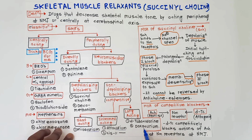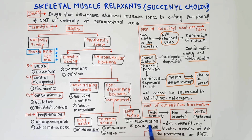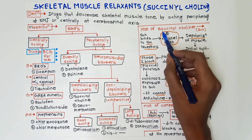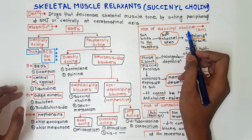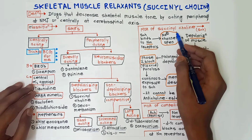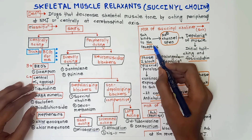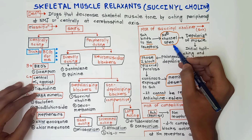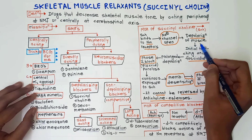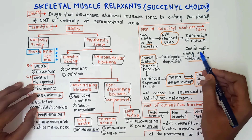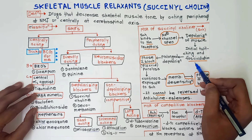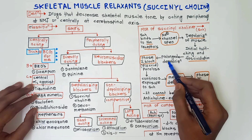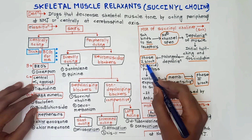The most important drug to remember is d-tubocurarine. Now, the mechanism of action of succinylcholine: succinylcholine binds to NM receptors at the neuromuscular junction, sodium channels open, and depolarization of muscle occurs, causing initial twitching and fasciculation.